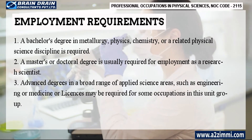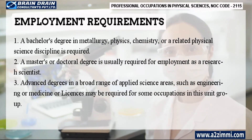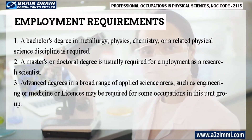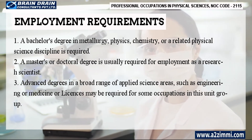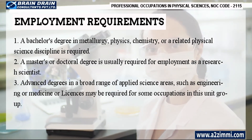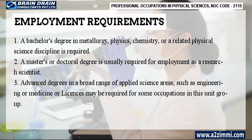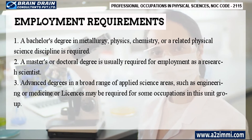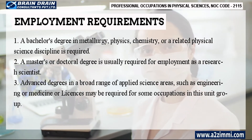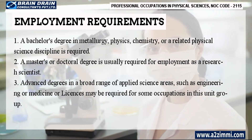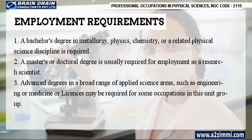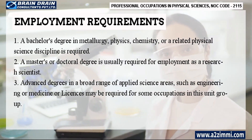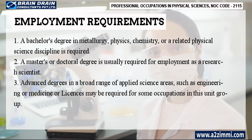Following are employment requirements for the profile of other professional occupations in physical sciences. A bachelor's degree in metallurgy, physics, chemistry, or a related physical science discipline is required. A master's or doctoral degree is usually required for employment as a research scientist. Advanced degrees in a broad range of applied science areas, such as engineering or medicine, or licenses, may be required for some occupations in this unit group.